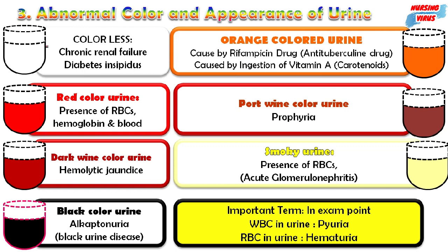The third topic is the different urine colors indicating which disorder. Colorless urine is seen in chronic renal failure or diabetes mellitus. Red color indicates presence of RBCs, hemoglobin, or blood. Dark wine color indicates hemolytic jaundice. Black color indicates alkaptonuria — the black urine disease. Orange color indicates rifampicin drug — one of the anti-tuberculosis drugs — when administered, orange color urine can be seen.